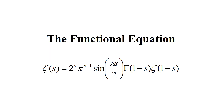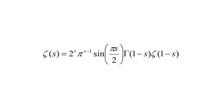The functional equation: zeta of s equals 2 to the s, times pi to the s minus 1, times sine of pi·s over 2, times gamma of 1 minus s, times zeta of 1 minus s. The functional equation was established by Bernard Riemann in his 1859 paper on the number of primes less than a given magnitude, and was used to construct the analytic continuation in the first place. In simple words, this equation shows us the link between the real part of the zeta function and the analytic continuation part, meaning we can use the convergent side values to find the corresponding analytic continuation value on the divergent side.